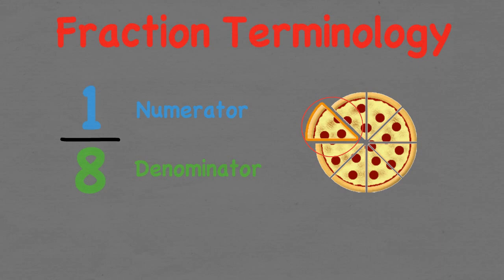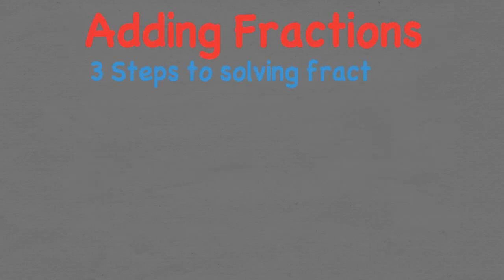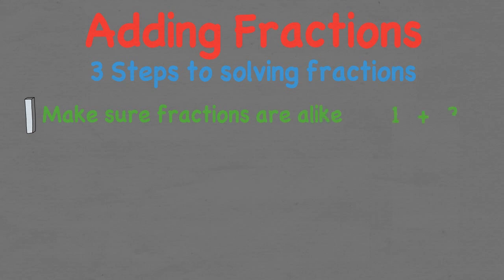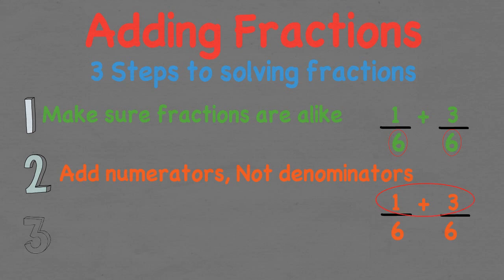Now that we have an understanding of the terminology, we can look at the steps involved in adding a fraction. When adding a fraction, we need to make sure the fractions are alike, which means their denominators are the same. If they are, we can immediately start to add the numerators together, but do not add the denominators. Once we have added the two fractions together, we are then able to simplify the fraction if possible.